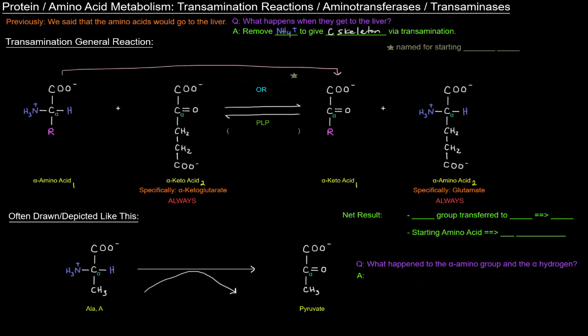Now when that happened, where did the actual amino group go? Well, the amino group and the alpha hydrogen went here onto alpha ketoglutarate. And when that happens, that turns that alpha ketoglutarate into glutamate, which is specifically an alpha amino acid. So that pink arrow there is showing that this alpha amino acid number one becomes alpha keto acid number one. And alpha keto acid number two, the alpha ketoglutarate, becomes alpha amino acid number two, which is glutamate specifically. So this is called a transamination reaction, and this is catalyzed by an enzyme called an aminotransferase or a transaminase.